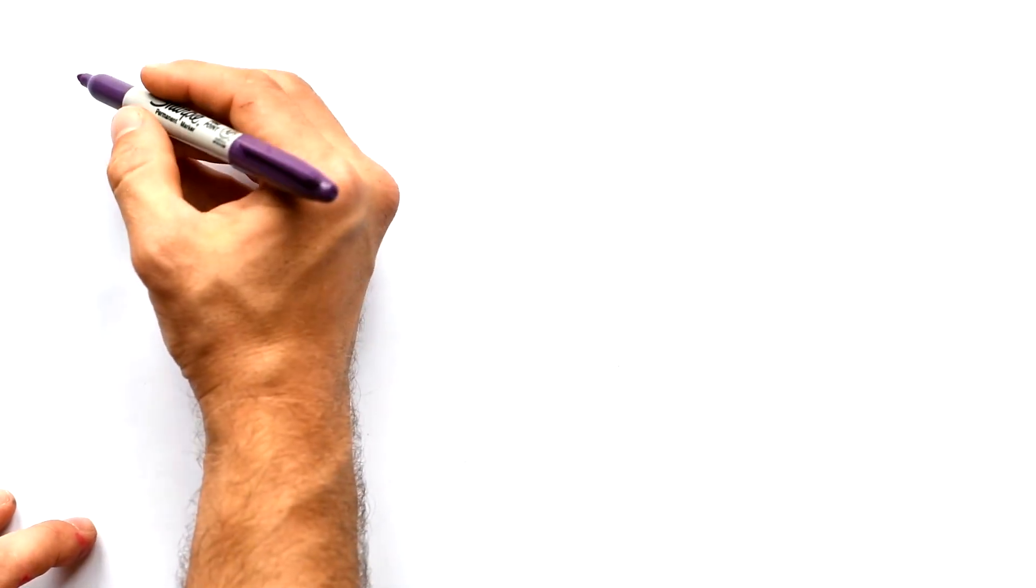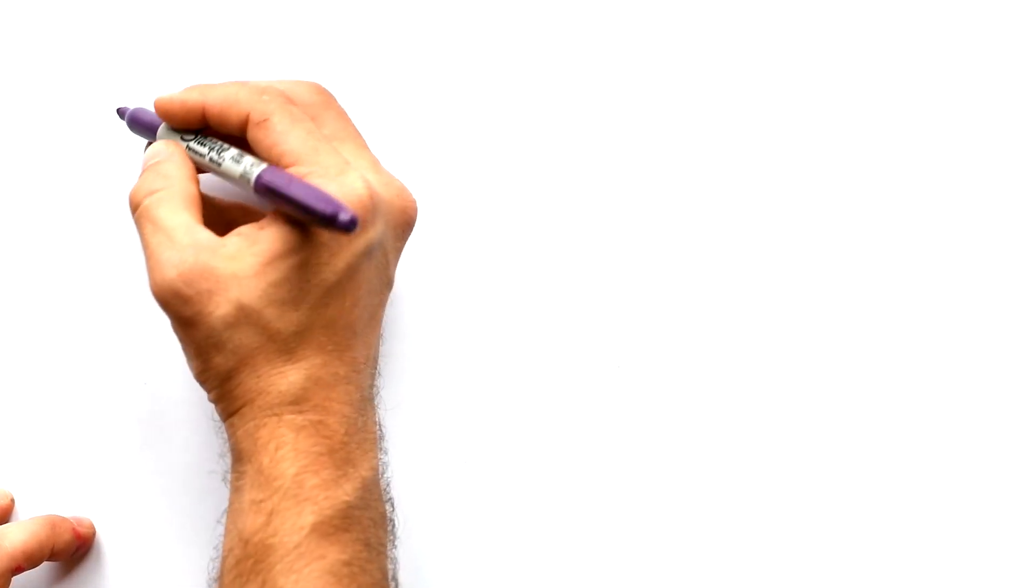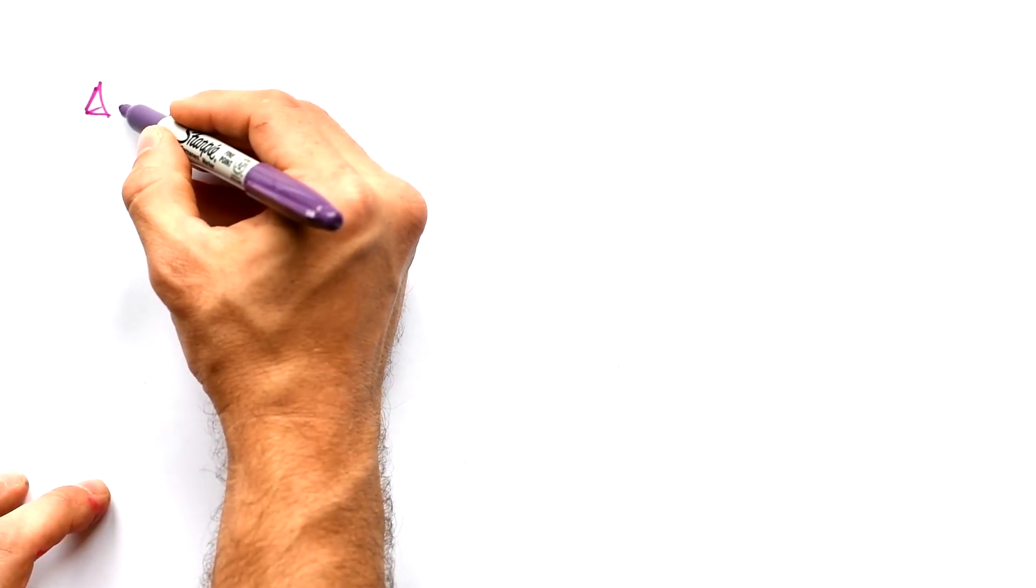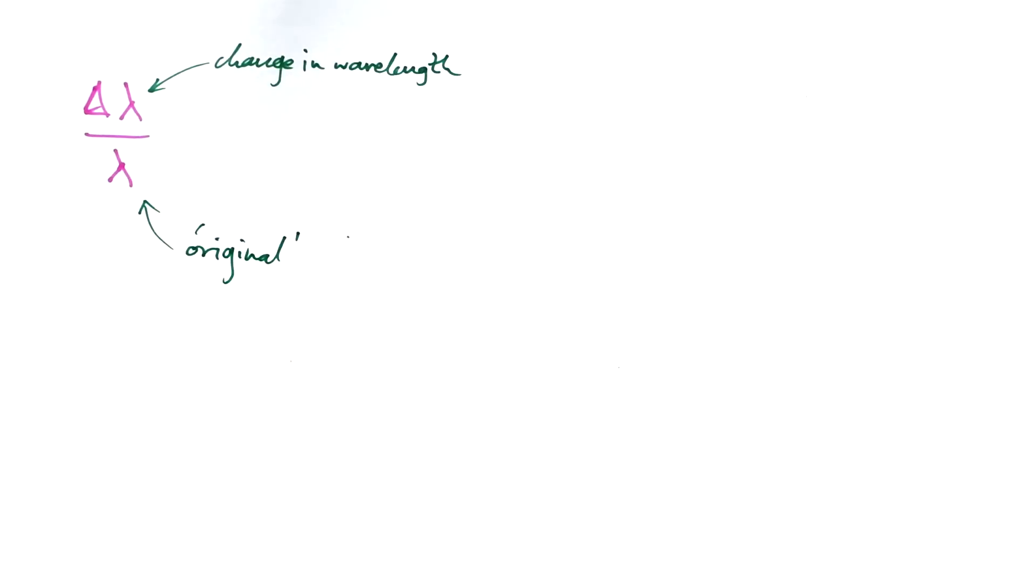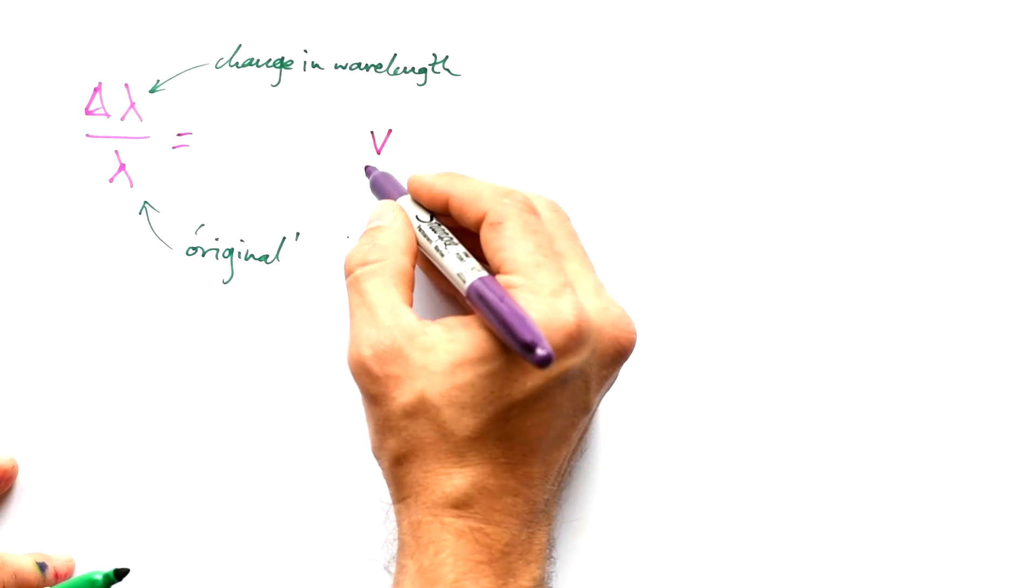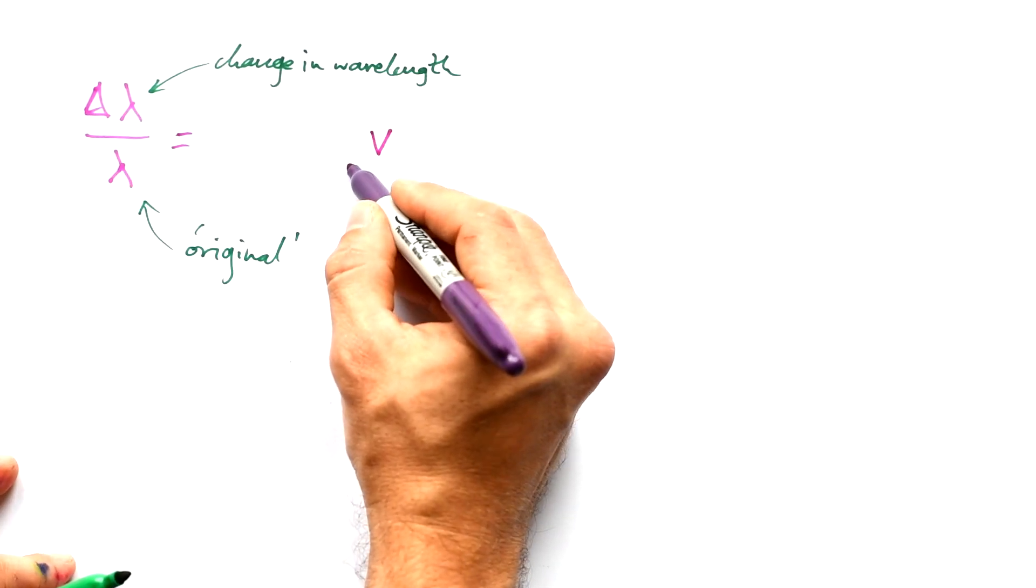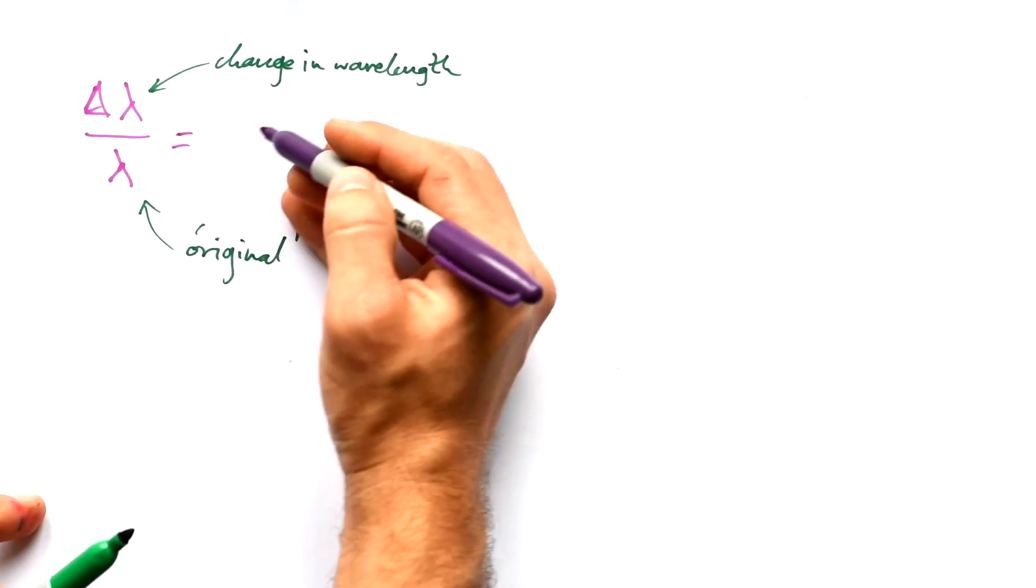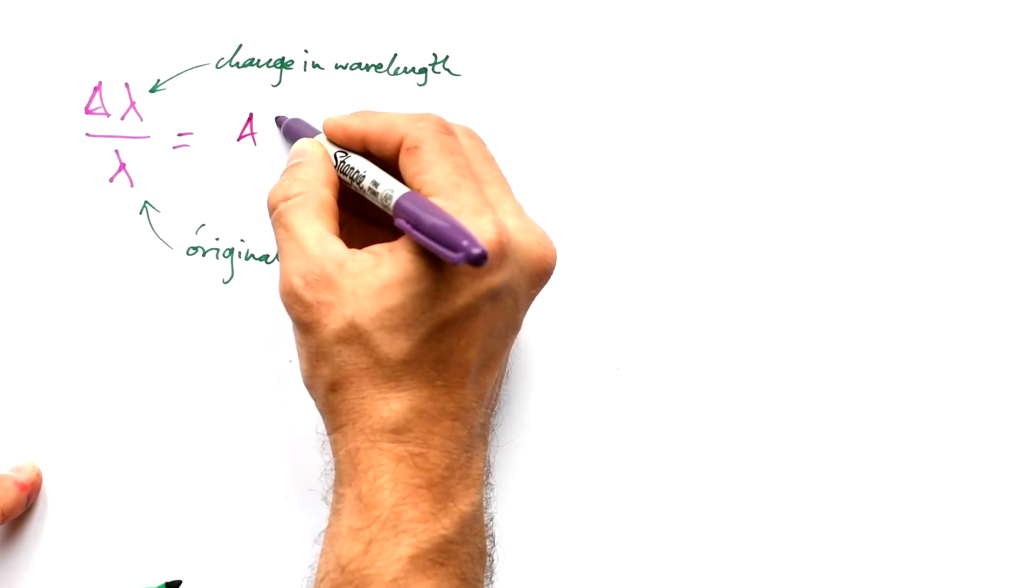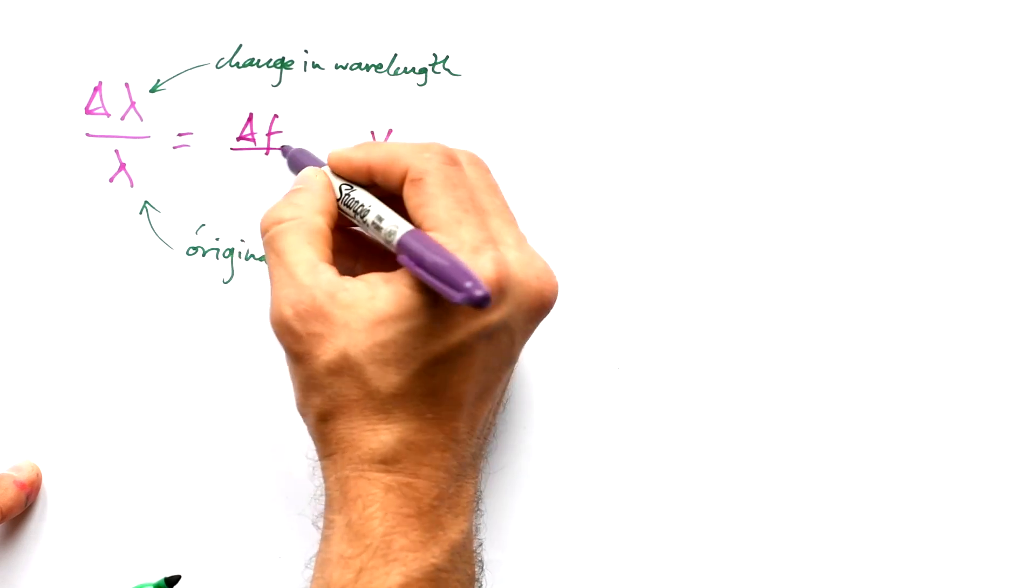So the equation for general Doppler effect is this. The change in wavelength divided by the original wavelength, that is equal to the speed between the observer and the source divided by c, that is the actual speed of the wave that's being emitted and observed. But it not only works for wavelength, it also works for frequency as well.